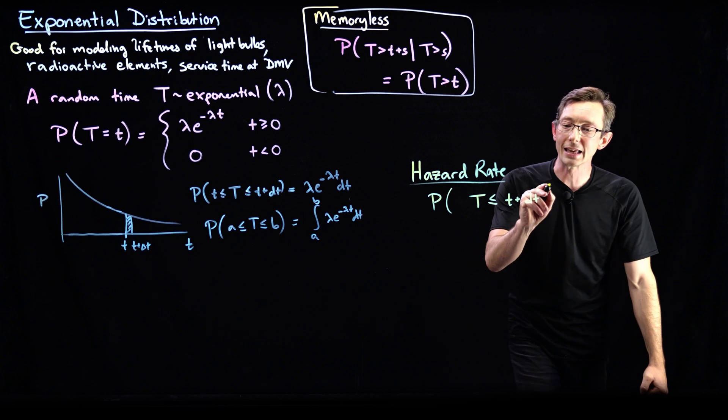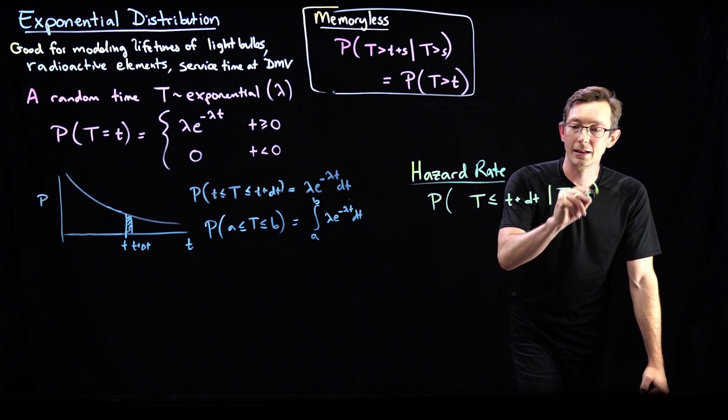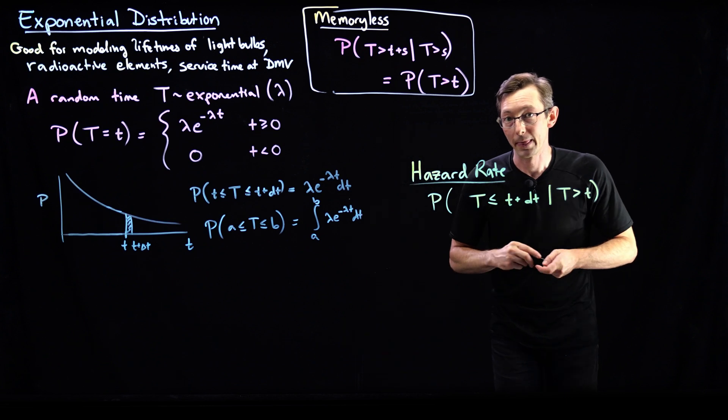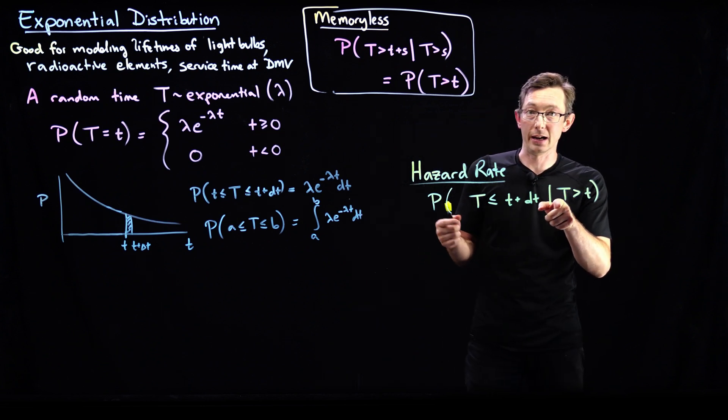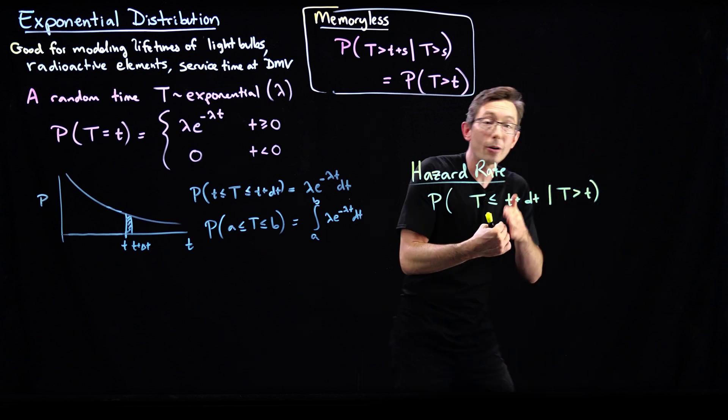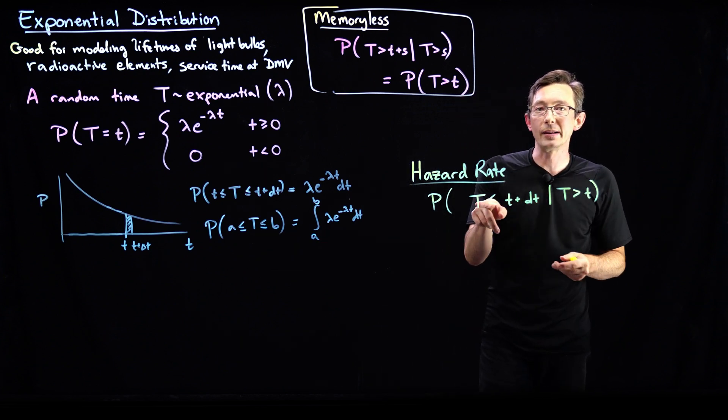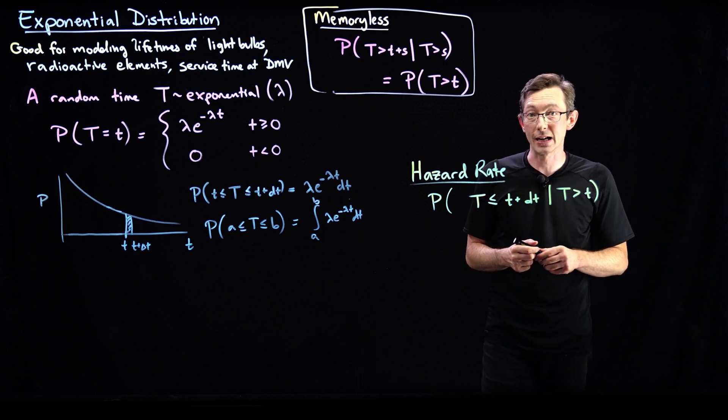But I'm going to compute this given that I have already lasted little t amount of time. So given that my failure time of my light bulb is greater than little t, meaning I've already lasted little t amount of time, what's the probability of failing in the next dt moment of time?